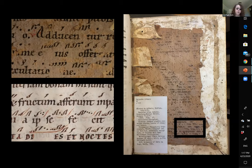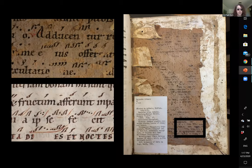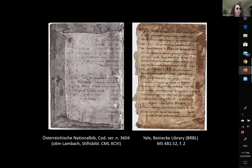Sometimes, if you're lucky, you can even identify the missing fragment by studying the offset — the text of the offset as well as the stains, wormholes, and other damage. In this particular case, I was able to identify the paste down that had been removed from this binding as being part of the Beinecke's collection, and I also wrote a blog post about another such discovery just last week.